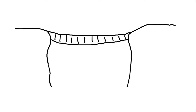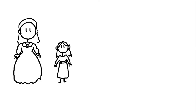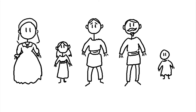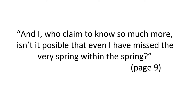The novella begins in medias res with the collapse of the bridge, then uses a series of flashbacks to tell the stories of the deceased before skipping back to the present aftermath. The story is told in third-person omniscient, with occasional slips into first-person, as could be seen on page nine: "And I, who claim to know so much more — isn't it possible that even I have missed the very spring within the spring?"